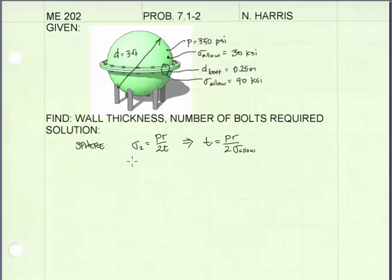For a sphere, the stress in the tank wall is equal to sigma 2, which is pr over 2t. And we can rewrite that equation to solve for t, and we'll get this expression shown here.